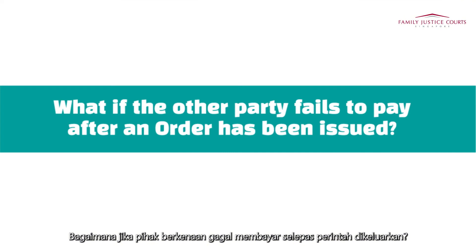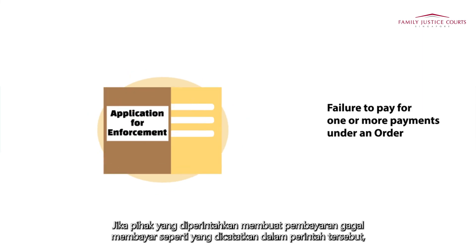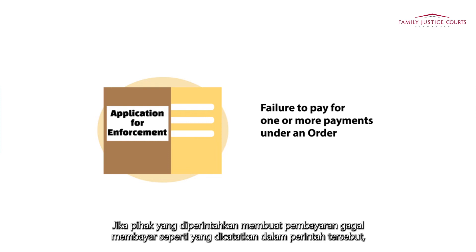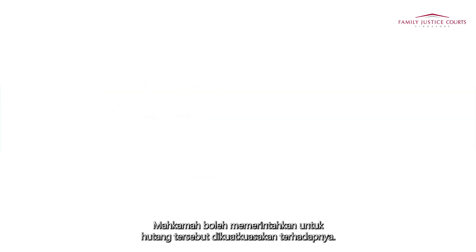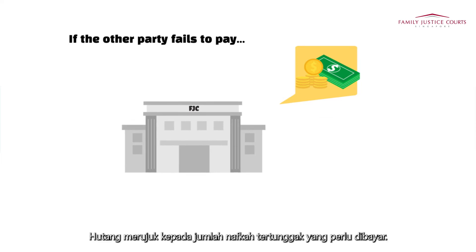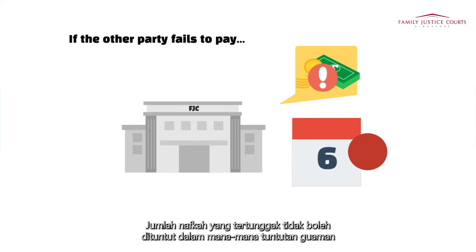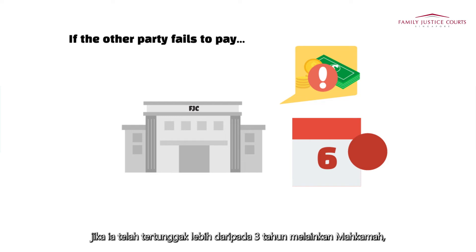What if the other party fails to pay after an order has been issued? You can apply for enforcement of the maintenance order. If the other party fails to make one or more payments required under an order, the court may order the arrears to be enforced against him or her. Arrears refer to the outstanding amount of maintenance payable. No amount owing as maintenance shall be recoverable in any suit if it accrued due more than three years unless the court, under special circumstances, otherwise allows.